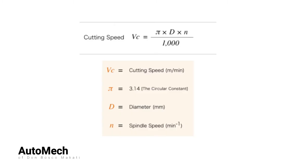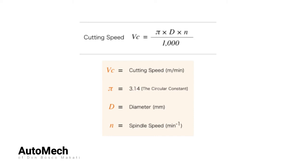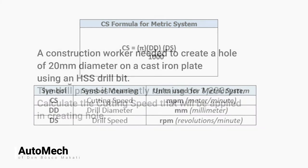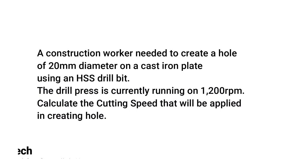This is the original formula on how to calculate the cutting speed during drilling operation. However, to make it less confusing based on what we have discussed regarding the factors of drilling operation, we will be substituting the variables. Let's say a construction worker needed to create a hole of 20mm diameter on a cast iron plate using an HSS drill bit. The drill press is currently running on 1200 revolutions per minute. Calculate the cutting speed that will be applied in creating the hole.